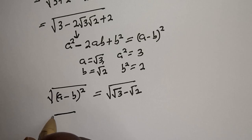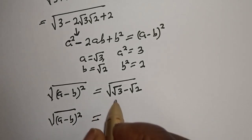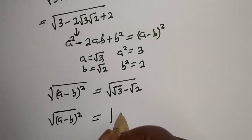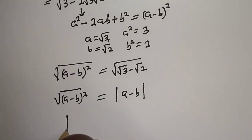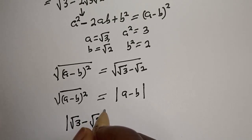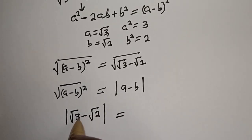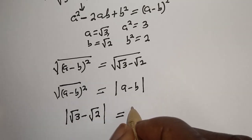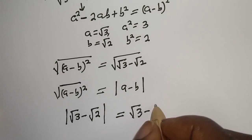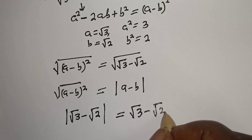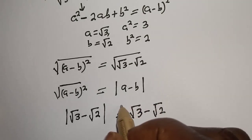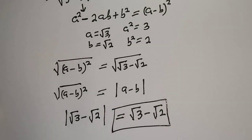But square root of 5 minus 2 is of the form (a minus b) squared, which equals the absolute value of a minus b. So from here we have the absolute value of root 3 minus root 2. This equals root 3 minus root 2, because root 3 is greater than root 2 and our answer must be positive. This is the final answer.